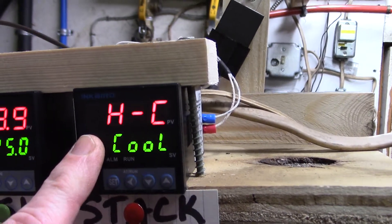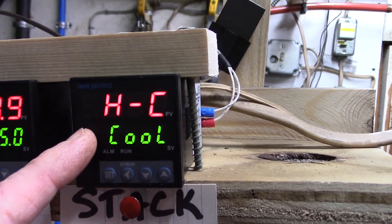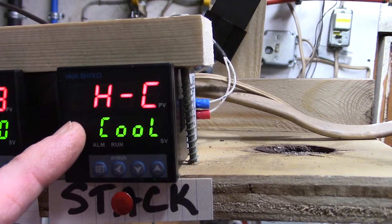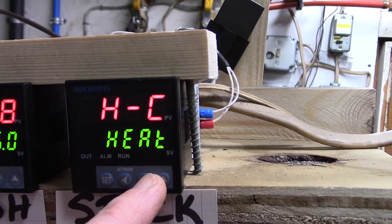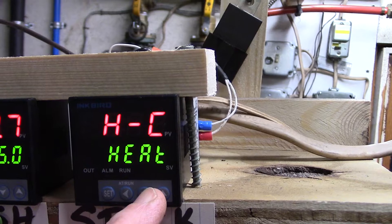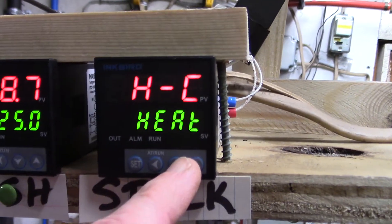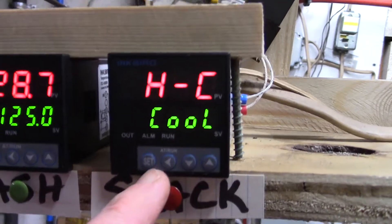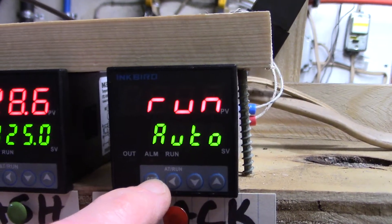And for this one we're using it in cool because we want the relay inside here to turn on when the temperature rises and hits the set point. You could leave it in heat I think if you use the normally closed connection on the relay. We're using the normally open one so we're gonna put it in cool.